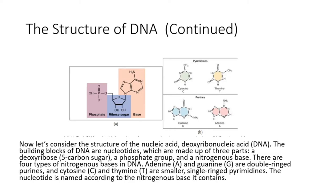There are four types of nitrogenous bases in DNA. Adenine (A) and guanine (G) are double-ring purines, and cytosine (C) and thymine (T) are smaller, single-ring pyrimidines.